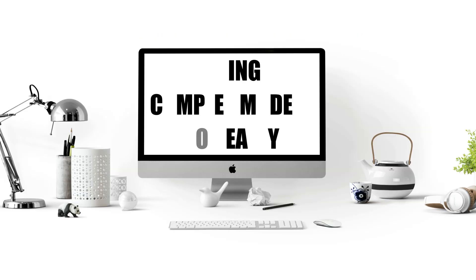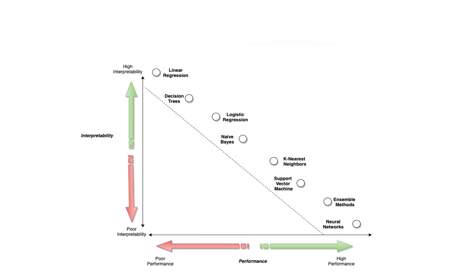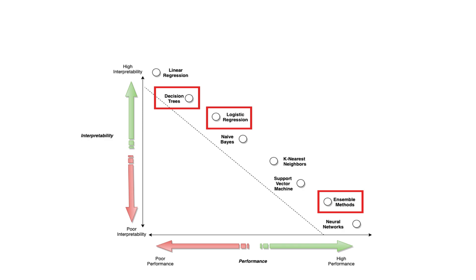Using complex models too early. Starting with complex models is a common beginner trap. Deep learning isn't always the answer — actually, it rarely is — especially when simpler models like logistic regression, decision trees, or random forests might work better.